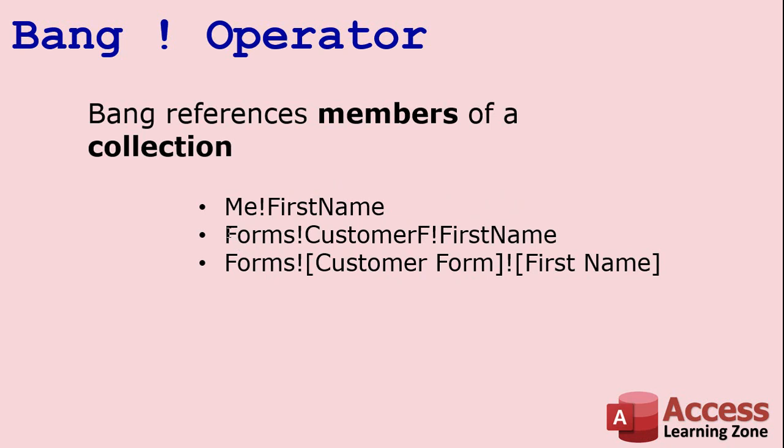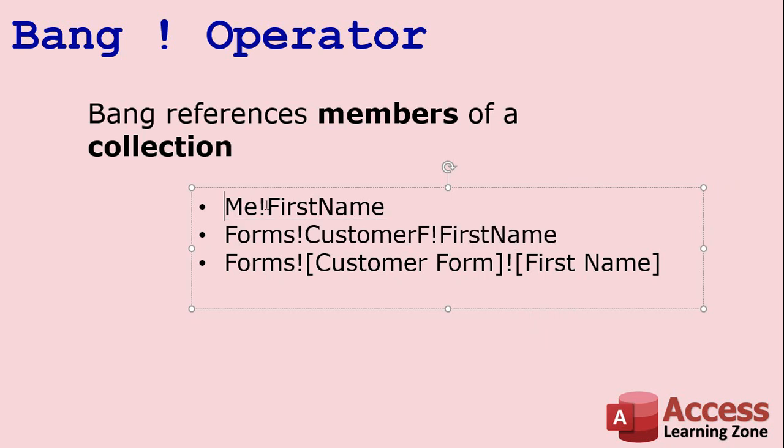This longer notation is the way you'd have to write it if you're referring to a field on a different form, whereas if you're using just the current form you can use the shorthand.